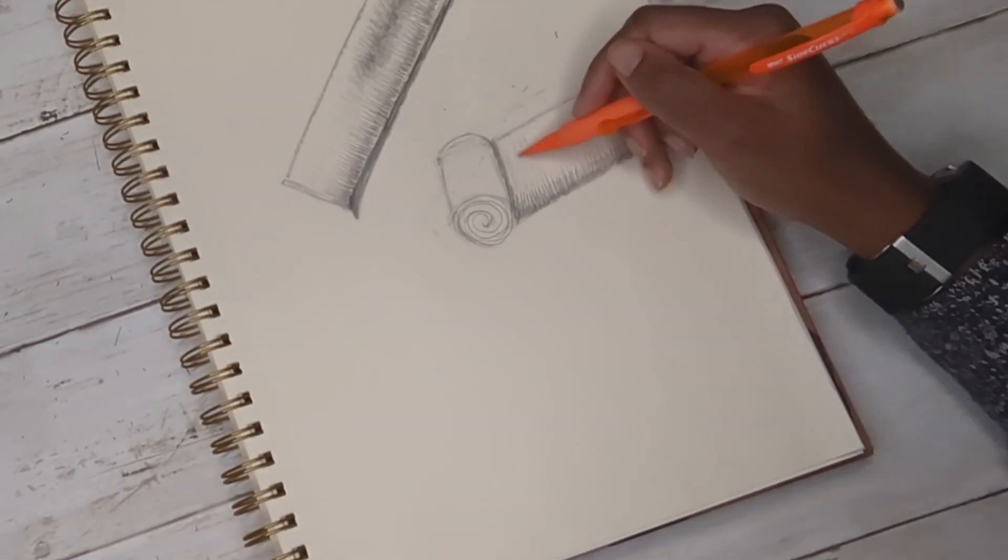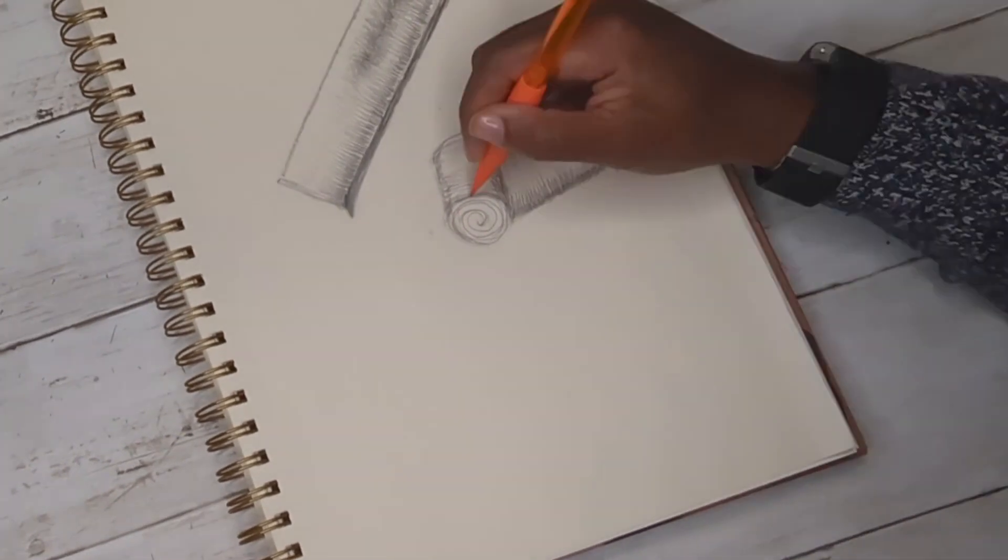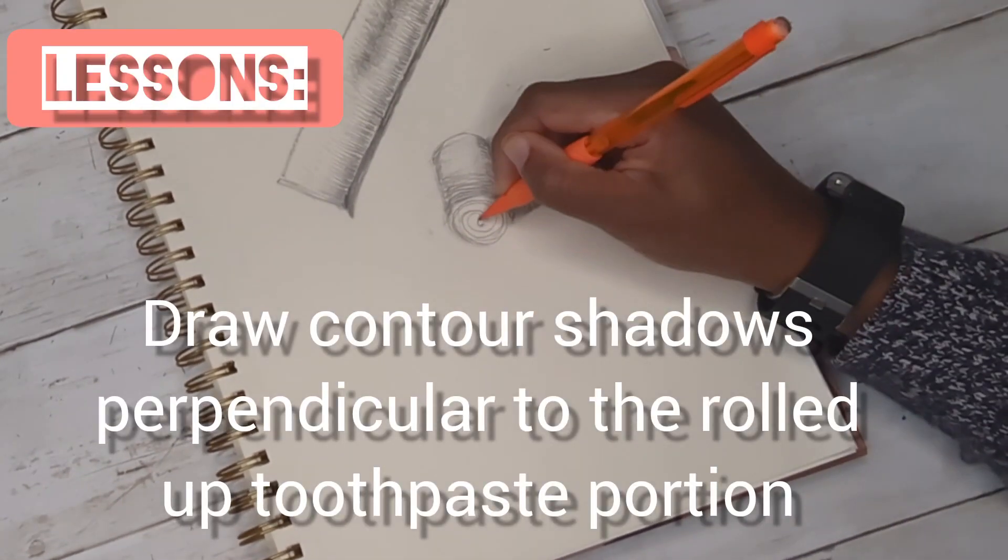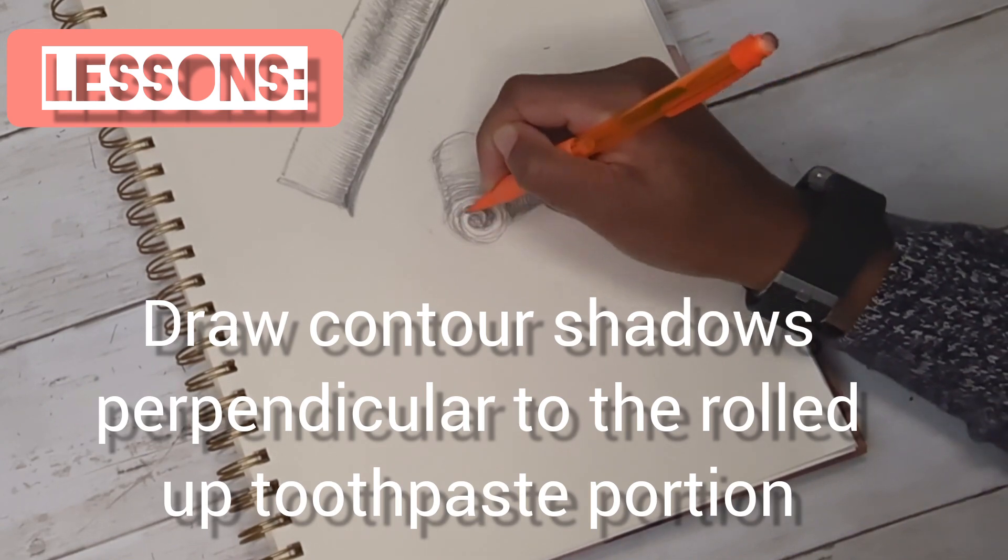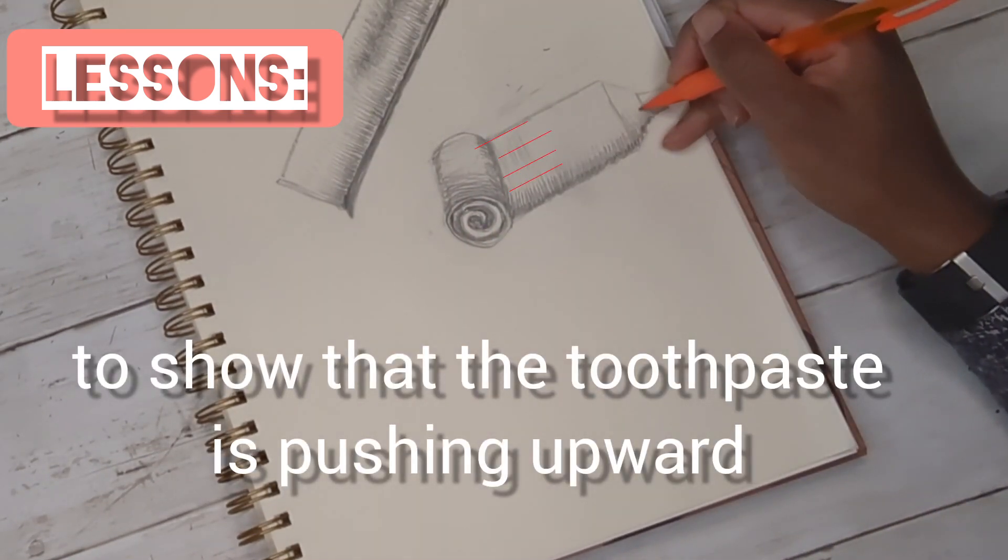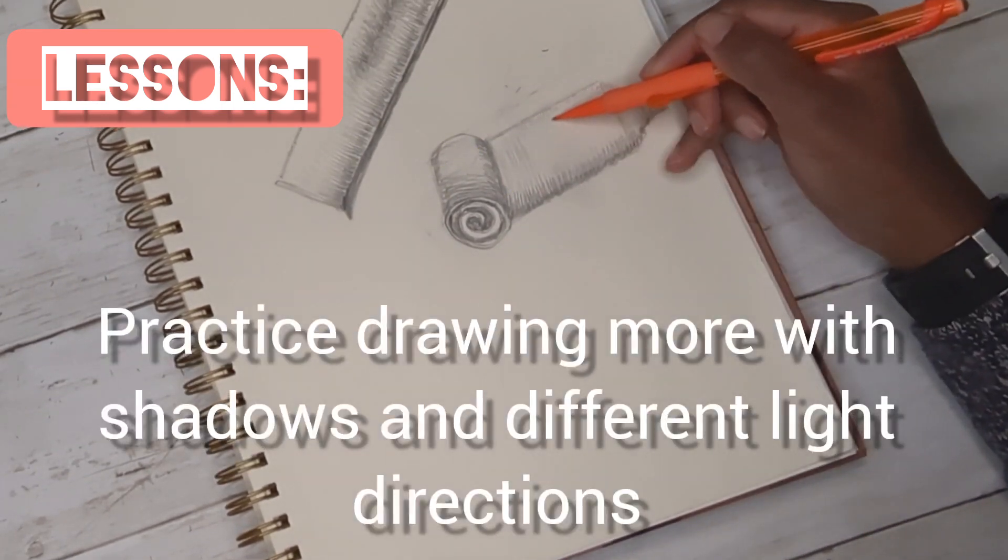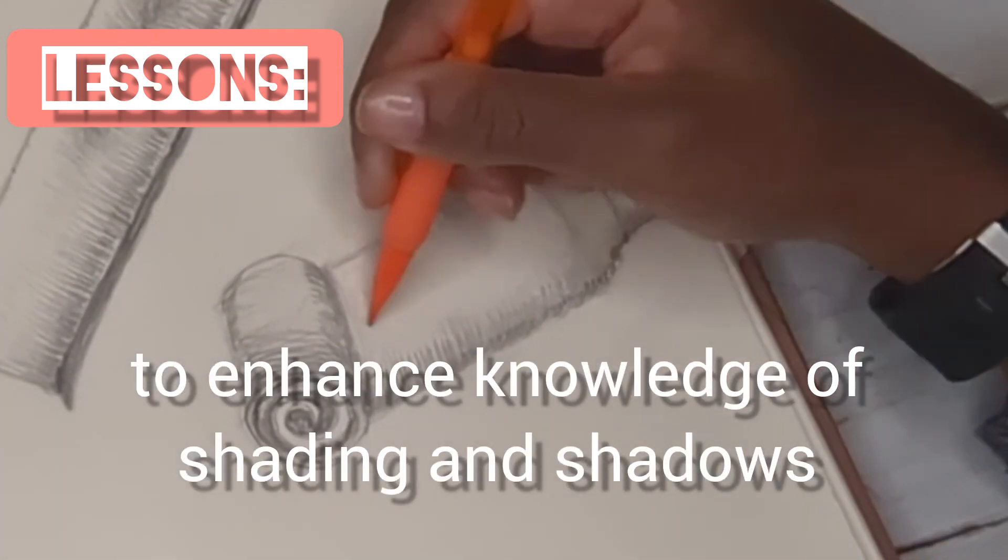Let me explain. Where the tube of toothpaste is rolling, my shadow lines—instead of doing contours that were horizontal to the rolled portion—I should have had perpendicular lines going there to illustrate that the toothpaste was going up towards the top.